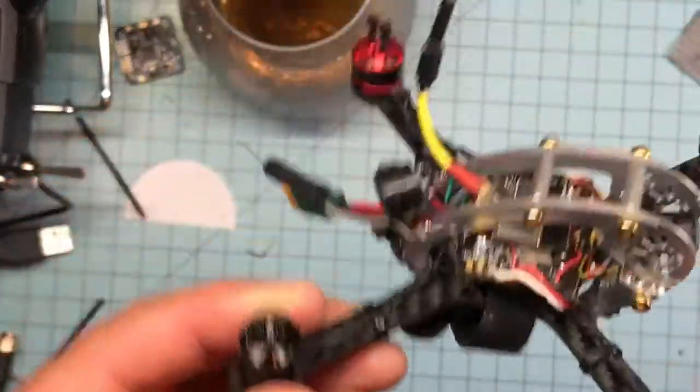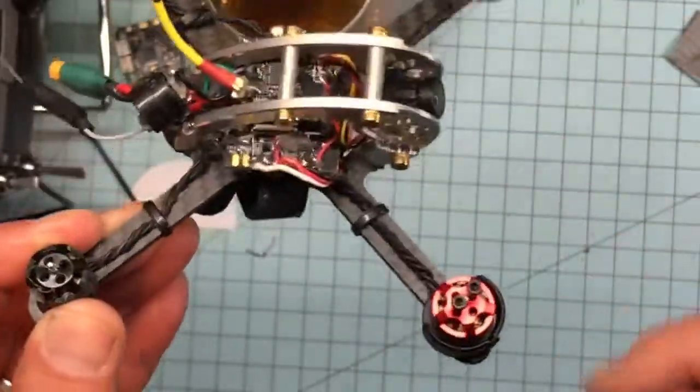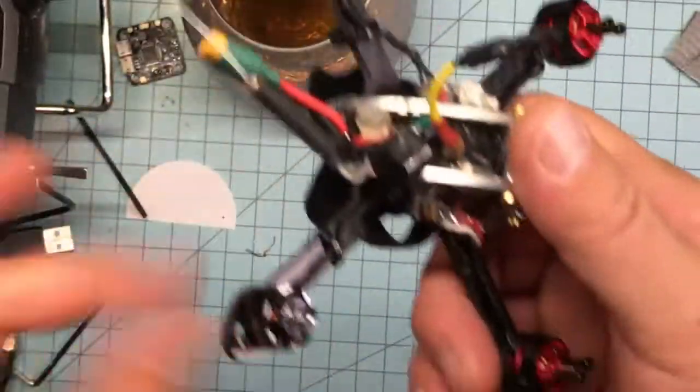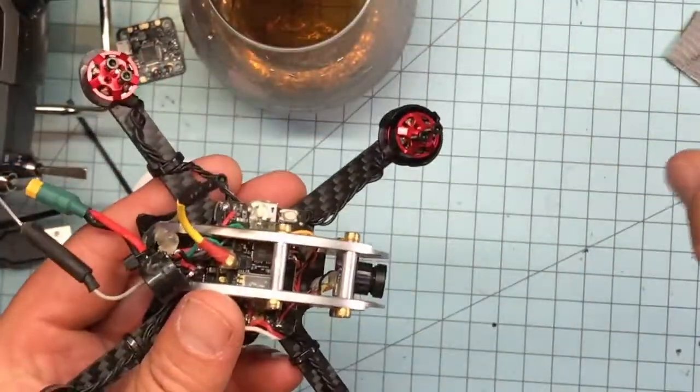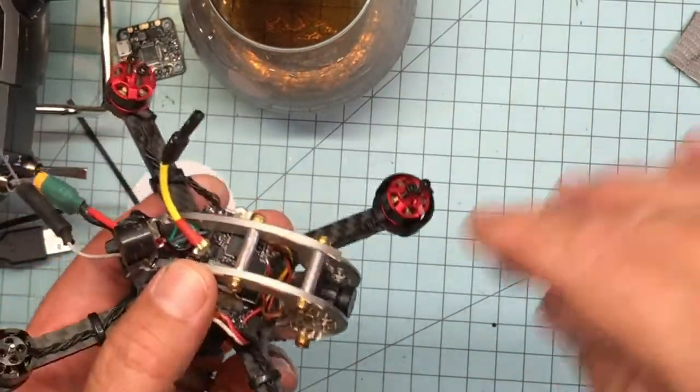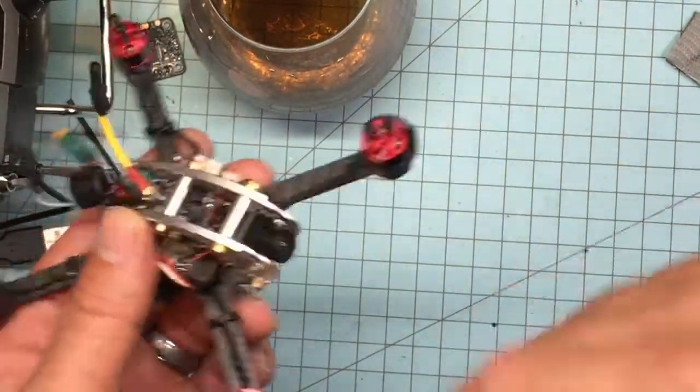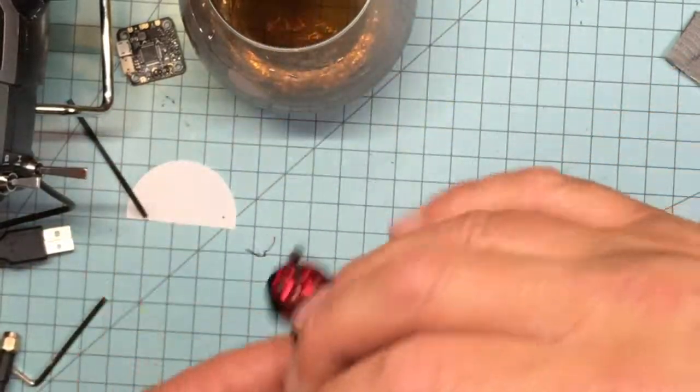Here's a really cool trick. Take the props off your bird, plug it into beta flight, plug a battery into your bird, connect, go down to the motors tab, and then enable the little safety switch there.